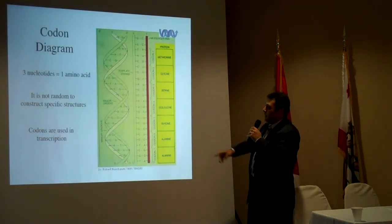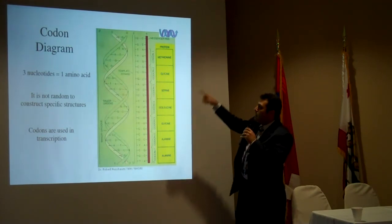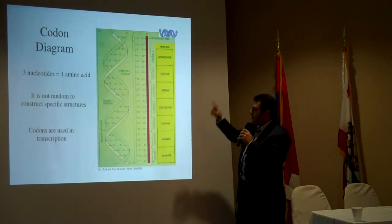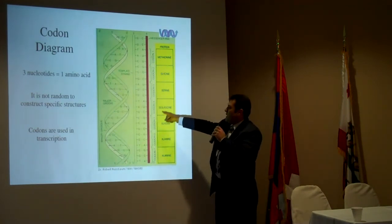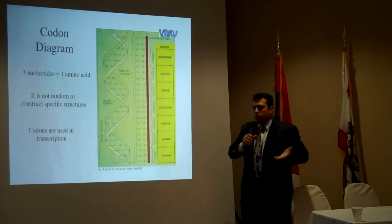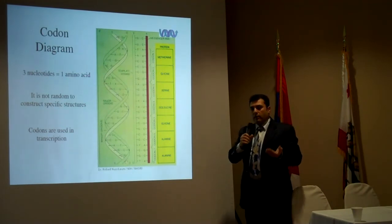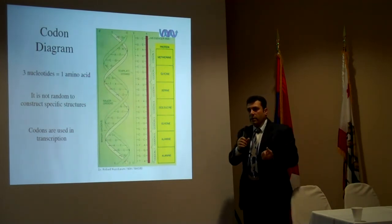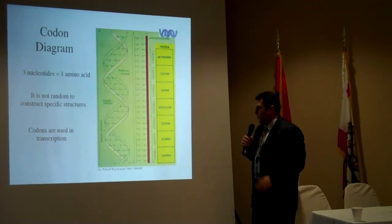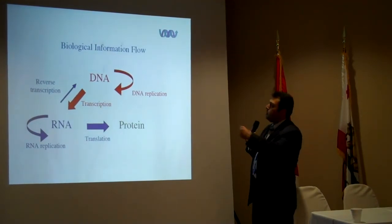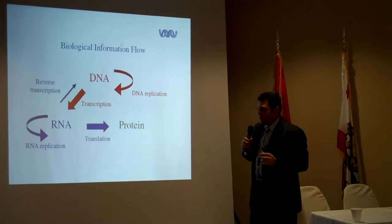Here is how translation works: the double helix is converted to a single strand called mRNA. The mRNA is translated into amino acids. We have 20 amino acids — nine of them are essential, meaning we must get them from food, and eleven of them the body can actually build itself.